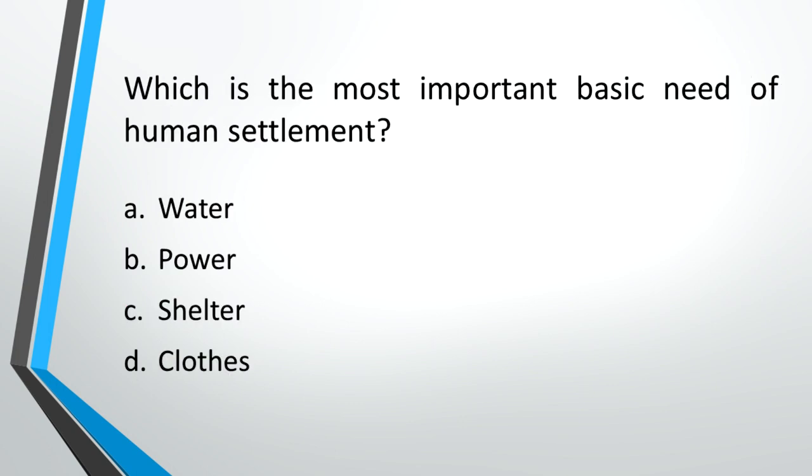Which is the most important basic need of human settlement? A: Water, B: Power, C: Shelter, D: Clothes. Answer: A, Water.